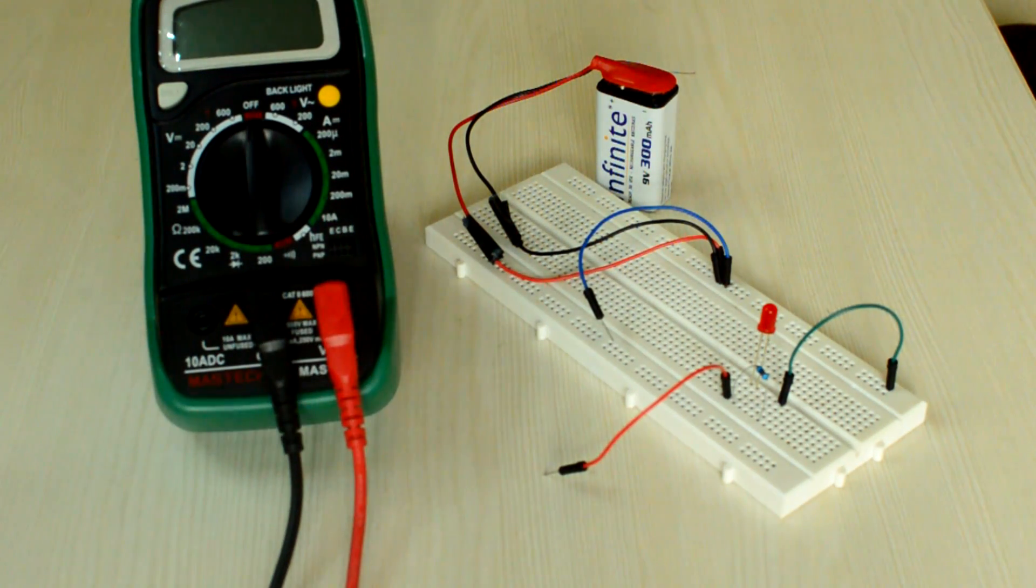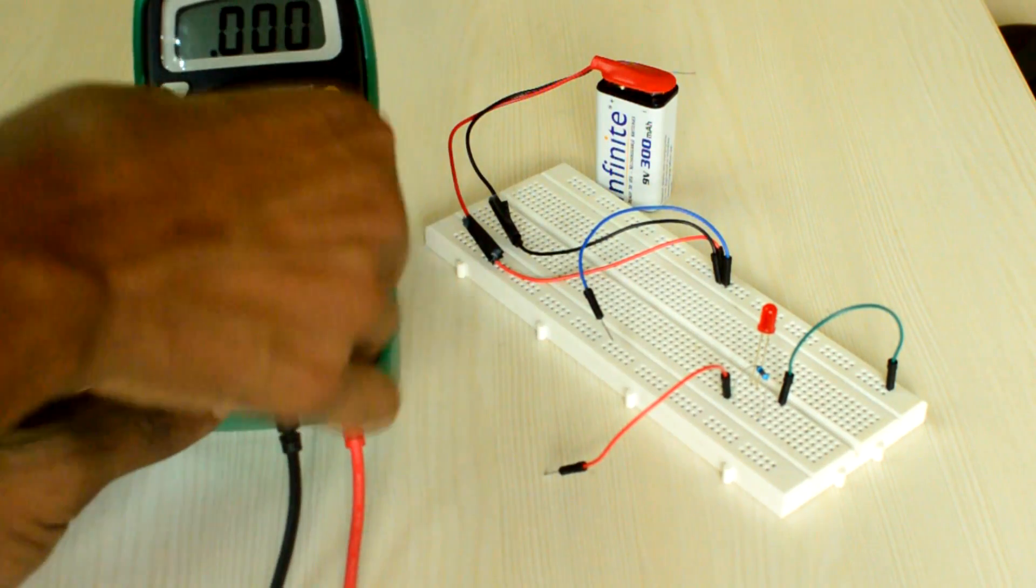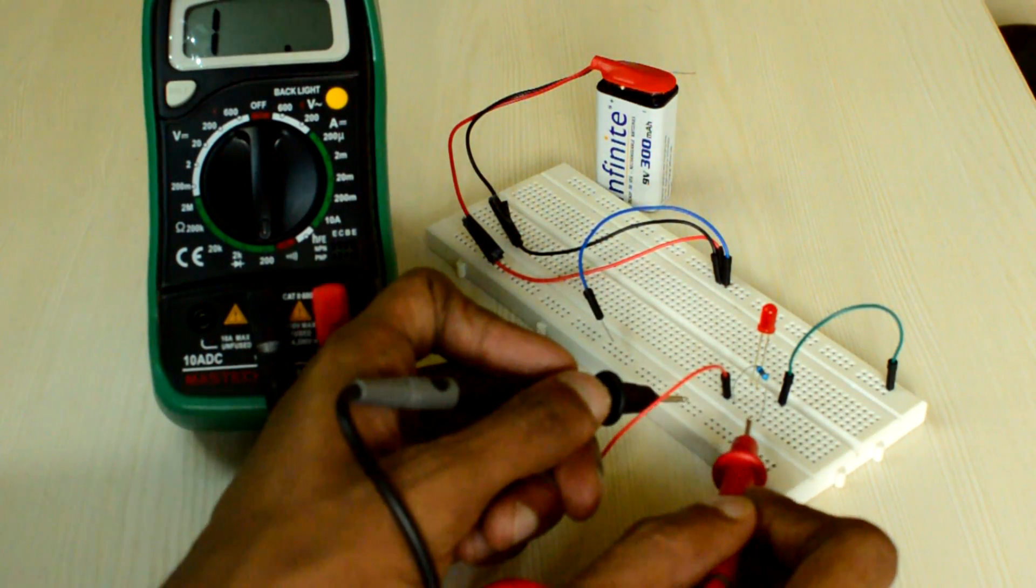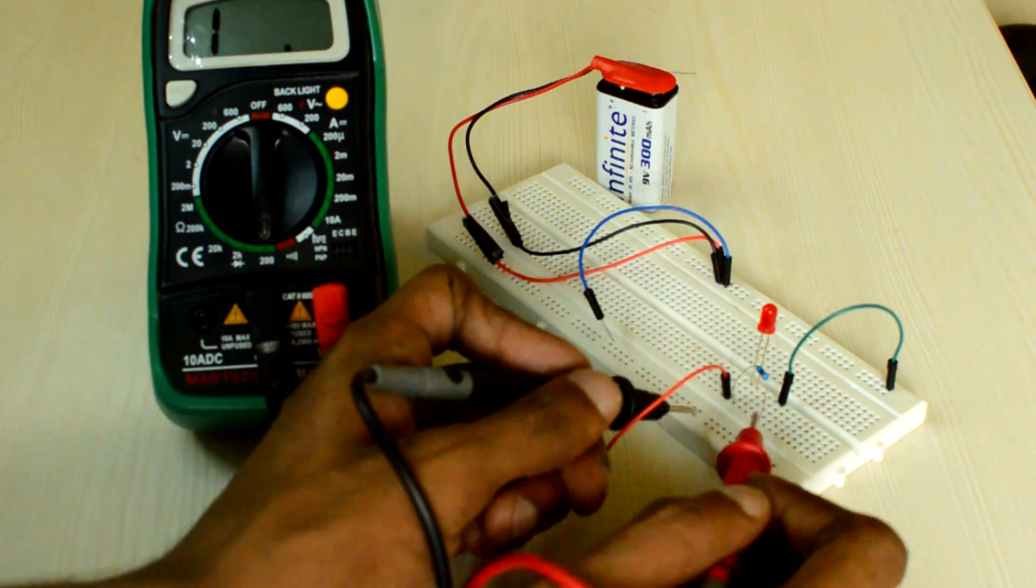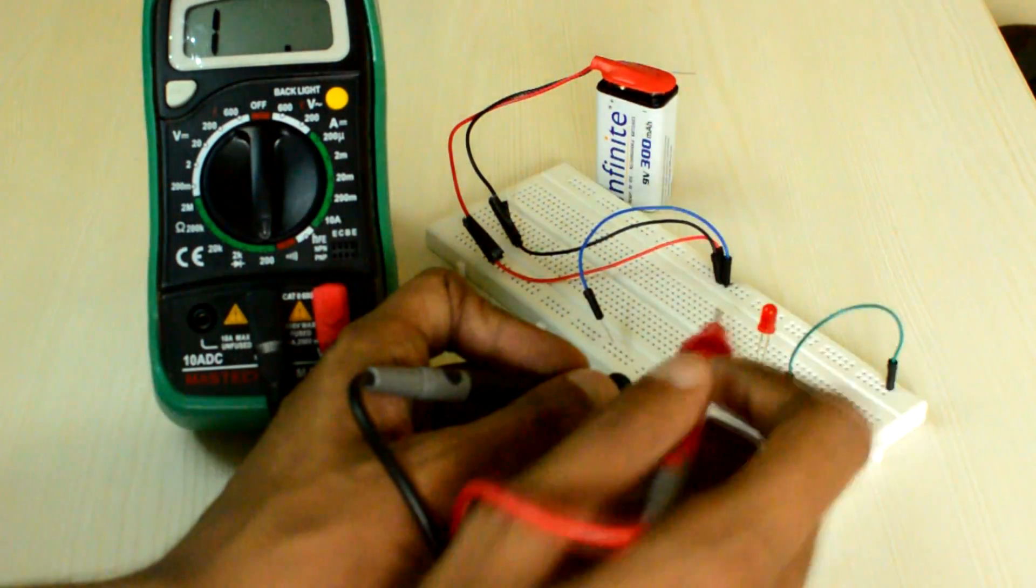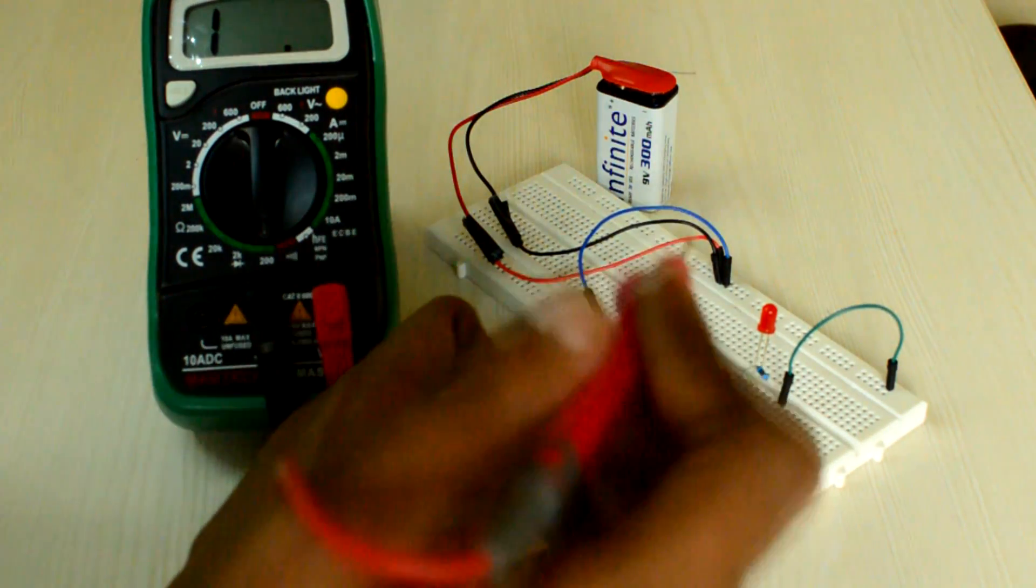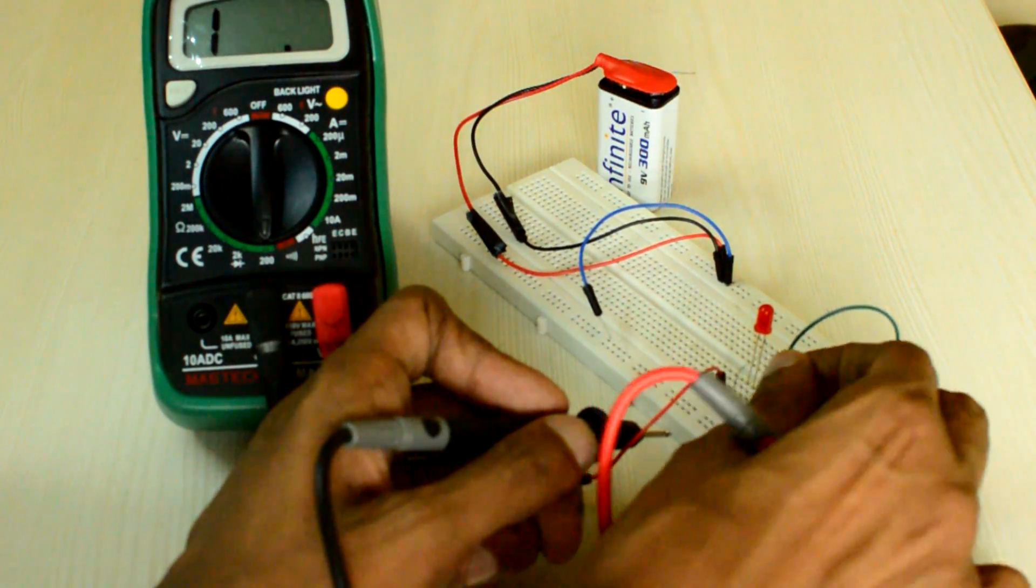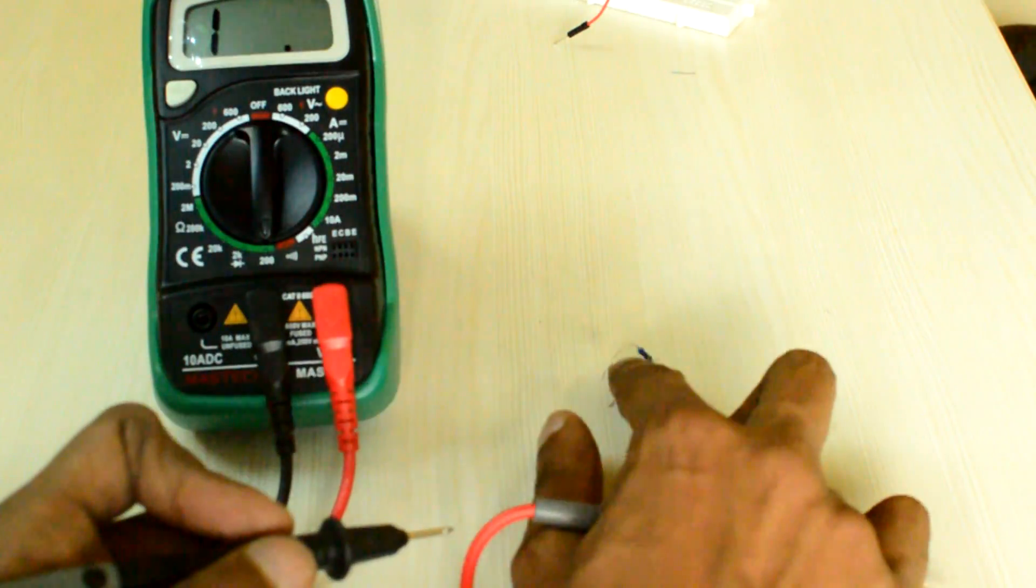Let us measure the resistance of the resistor used in this circuit with the DMM. Turn the dial of the DMM into 200 ohm mode first. Measuring the resistance like this without unplugging the resistor from the circuit is a very bad idea because it is very unlikely that you would end up with the right answer. That is because the other components in the circuit might be in shunt with this resistor. So whenever you want to measure the resistance, you have to disconnect the resistor from the circuit.